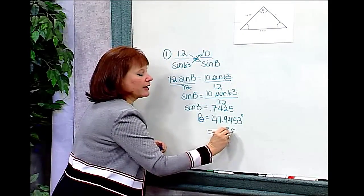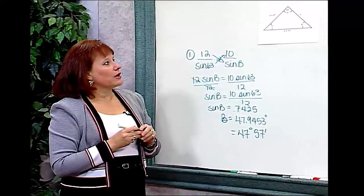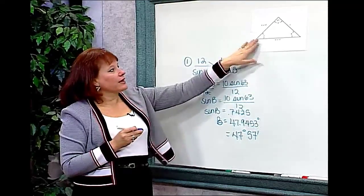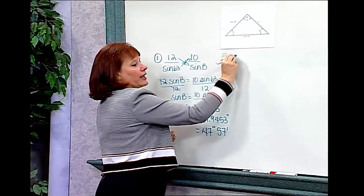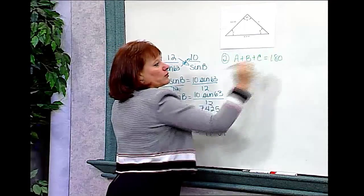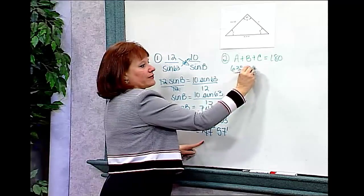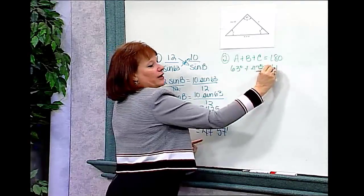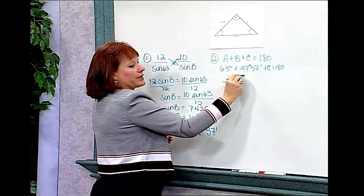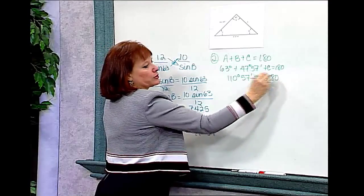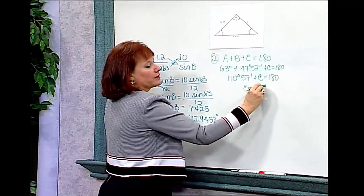That gives us angle B — 47 degrees and 57 minutes. Now we need to find angle C and side C. Since the three angles of a triangle must sum to 180 degrees: angle A (63°) plus angle B (47° 57') equals 110 degrees and 57 minutes. Subtracting from 180, angle C equals 69 degrees and 3 minutes.